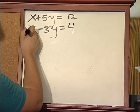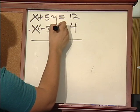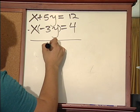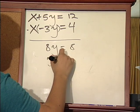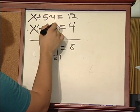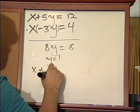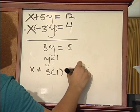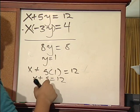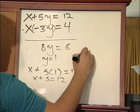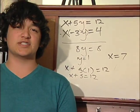We will subtract the bottom equation from the top one. The x's cancel out. This gives 5y minus negative 3y, so we get 8y. And 12 minus 4 is 8. Solve for y and y equals 1. Then substitute 1 in for y in the top equation: x plus 5 times 1 equals 12, so x plus 5 equals 12, giving x equal to 7. And that's how solving with the subtraction method works.